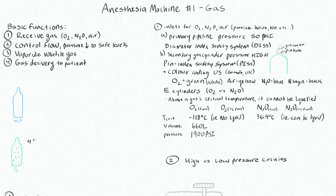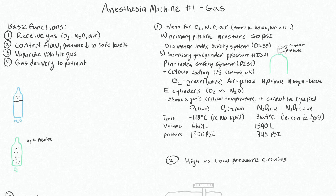This full oxygen tank is up to 1900 PSI with 660 liters. Compare that to a nitrous tank, which has a gas form above the liquid component, so its volume capacity is much higher. A full nitrous E-cylinder holds 1590 liters — the same physical size, but it carries more gas because it can be compressed into a liquid. However, the pressure inside this tank is 745 PSI, which is the saturated vapor pressure — the pressure that a gas above a liquid in an enclosed container will exert on that container.